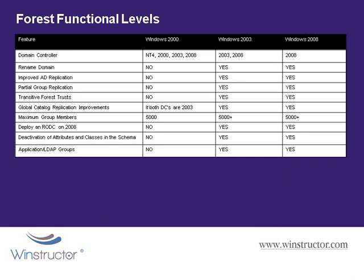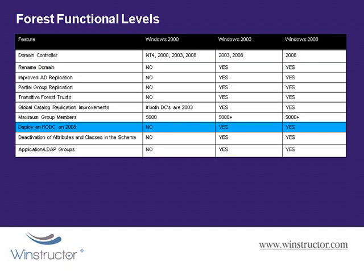Here we have a table of the various features you'll be able to utilize depending on which functional Forest level you're running. To raise the Forest functional level, you will need to be a member of the Enterprise Admins group. For example, if you'd like the ability to rename a domain, you'll need to be running your Forest functional level at Windows 2003 or Windows 2008, which means upgrading any Windows 2000 domain controllers to at least Windows 2003. Another good example would be deploying a read-only domain controller — a new feature of Windows 2008 — which requires at least the Windows 2003 Forest functional level.